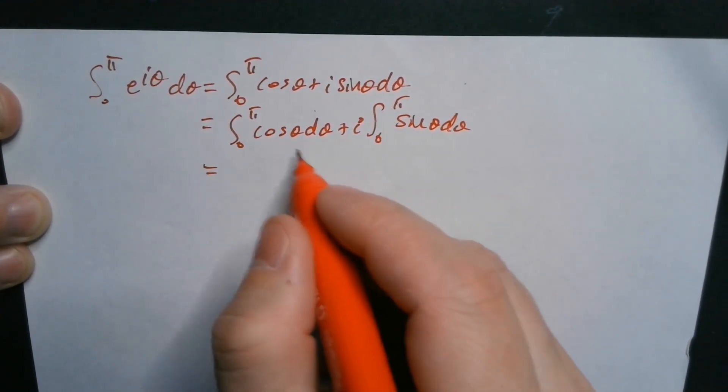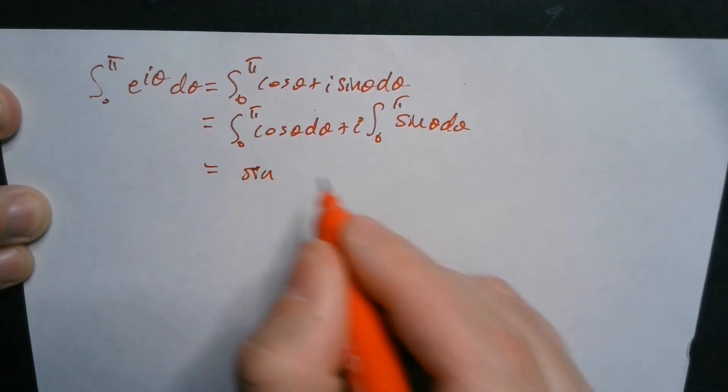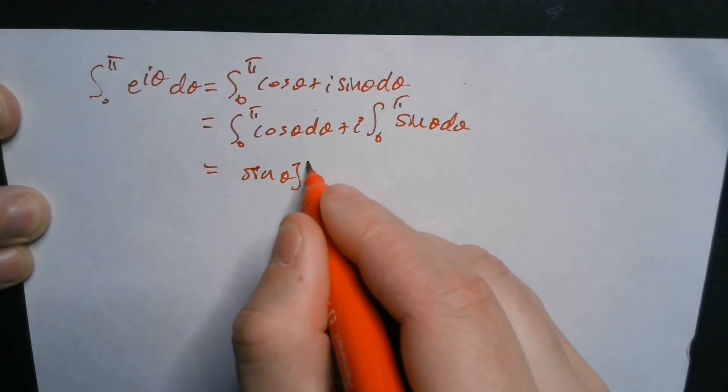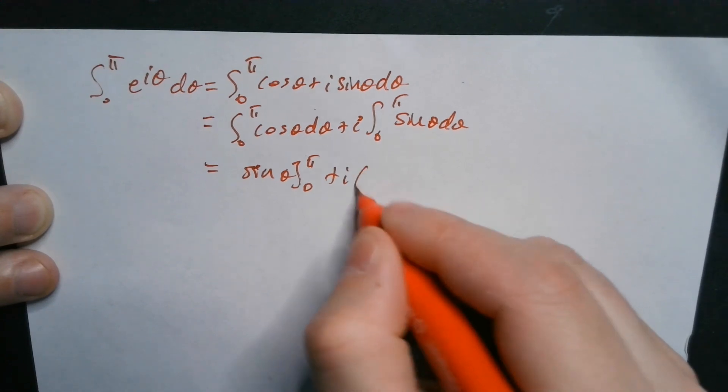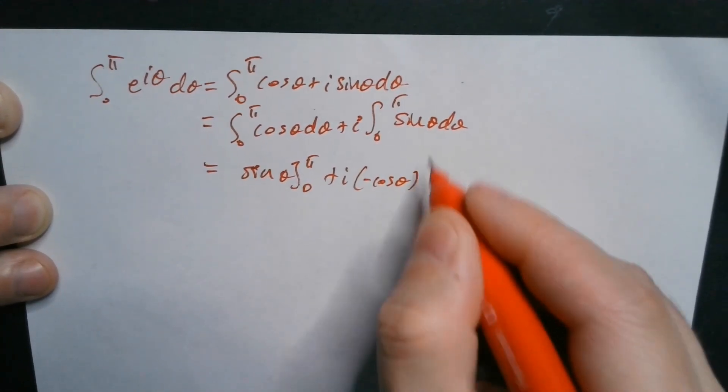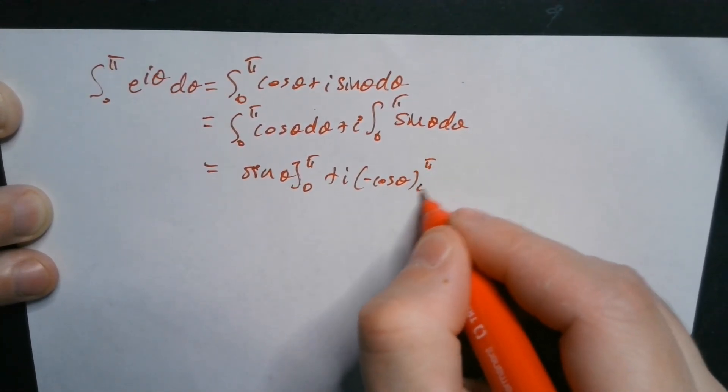Then you continue, you can do the integration here. So this is going to be here a sine of theta between pi and 0 plus i. Now this is going to be negative cosine, so negative cosine theta evaluated between pi and 0.